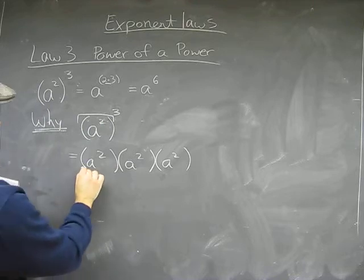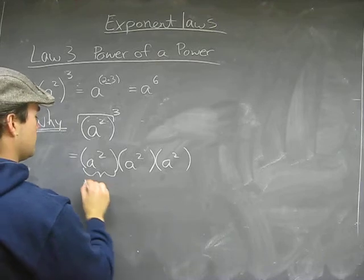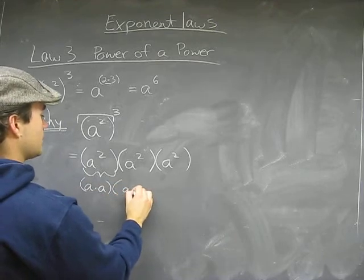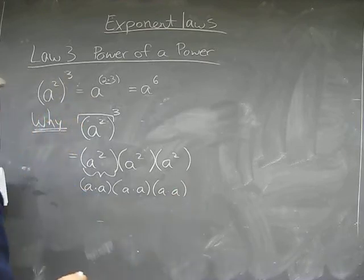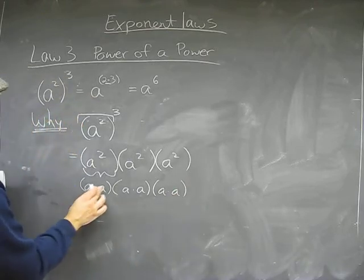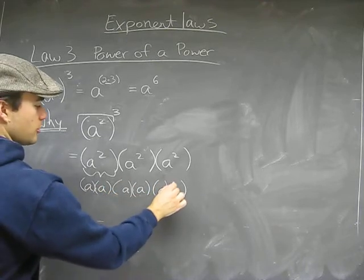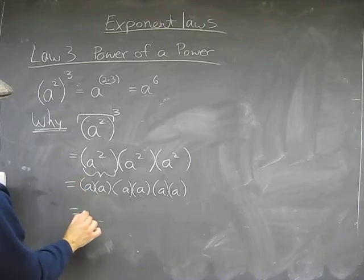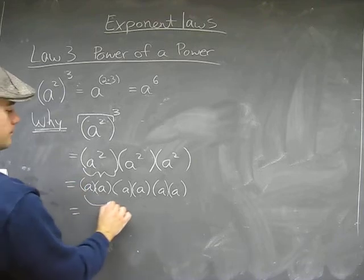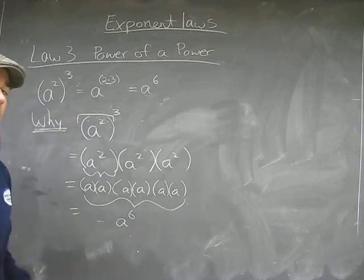And now we're smart math people. We know that this is A times A, A times A, A times A, A times A. We can use dots and brackets, but really what we have here is A times A, A times A, A times A, A.